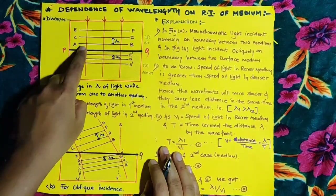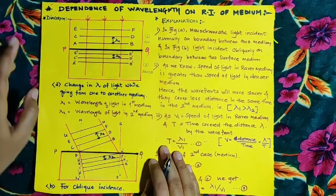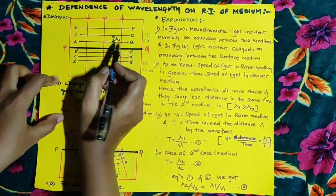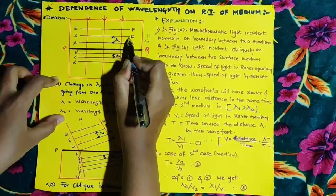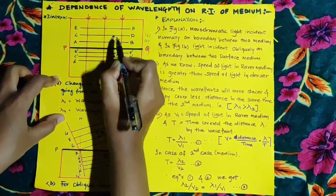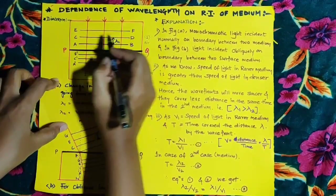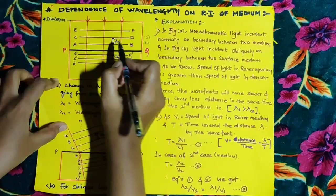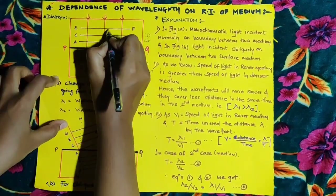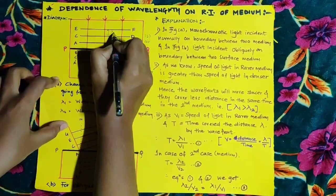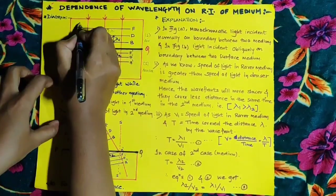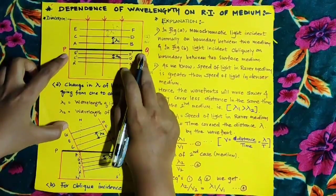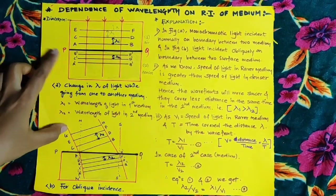The plane wavefronts of monochromatic light are denoted by EF, CD, and AB. The distance between two consecutive wavefronts is denoted by lambda. For wavefronts AB and CD, the distance is lambda; the distance between CD and EF is lambda 1. PQ is the boundary between the rarer and denser medium.